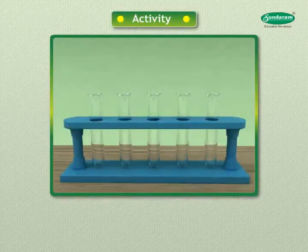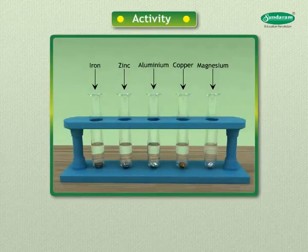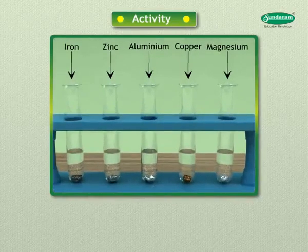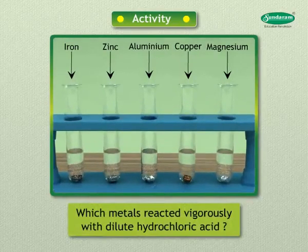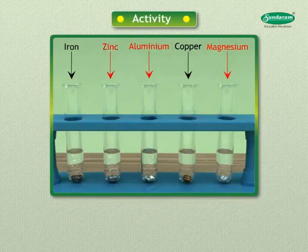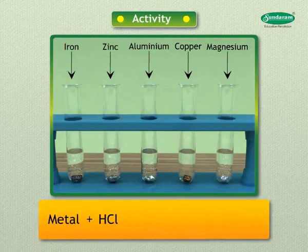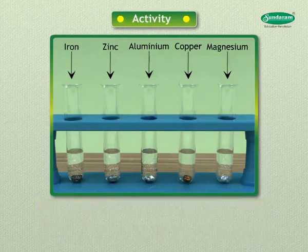Take metal samples of iron, zinc, aluminium, copper, magnesium, etc. in separate test tubes. Add dilute hydrochloric acid to each of them and observe the formation of bubbles carefully. Iron reacted vigorously; the rate of formation of bubbles reduces in order: aluminium, then zinc, then iron. Metals react with dilute hydrochloric acid to form metal chloride and hydrogen gas.